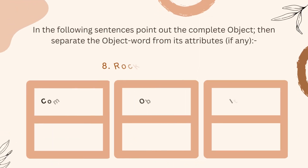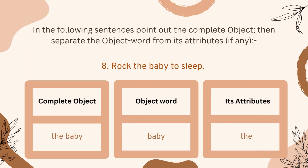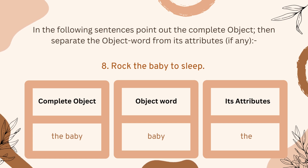Number eight: 'Rock the baby to sleep.' We have two words — 'the baby' — as the complete object. 'Baby' is the object word, and 'the' is used as an attribute.